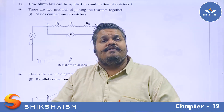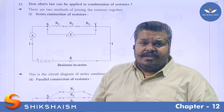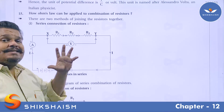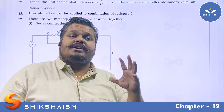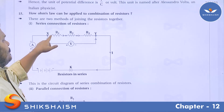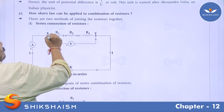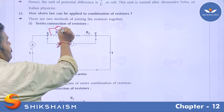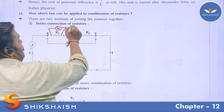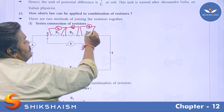We can define a series connection as: a connection in which the same amount of electric current passes through all the resistors R1, R2, and R3. The ammeter is an instrument which measures the electric current. The potential difference across R1 is measured by arranging a voltmeter called V1. Similarly, the potential difference across R2 is measured by V2, and for resistance R3 we arrange voltmeter V3.